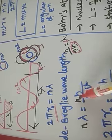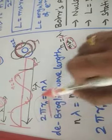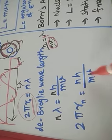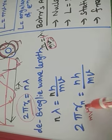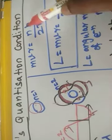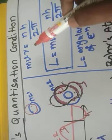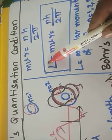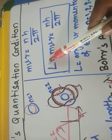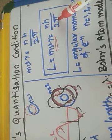According to the de Broglie wavelength, for the nth orbit: n lambda = h/mv. Substituting circumference 2πr for n lambda, we get 2πr = nh/mv, which rearranges to mvr = nh/2π. Here, mvr is the angular momentum of the electron revolving around the orbit. So the angular momentum equals nh/2π.